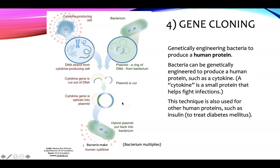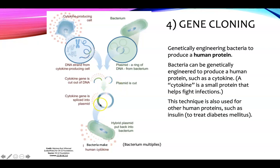Splicing is like what they used to do with film — you cut a big strand apart and insert a different section. Scientists cut out the healthy gene that codes for cytokine, cut open the plasmid from a bacterium, and stick that gene right in. This plasmid is then put back into the bacterium, which multiplies so that thousands and thousands of bacteria are now making human cytokine.